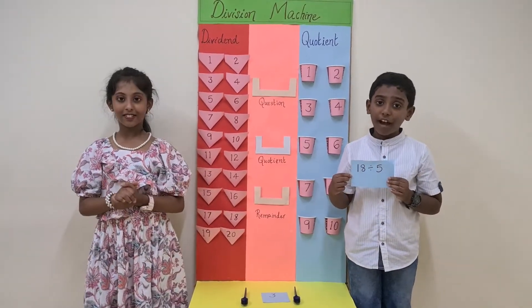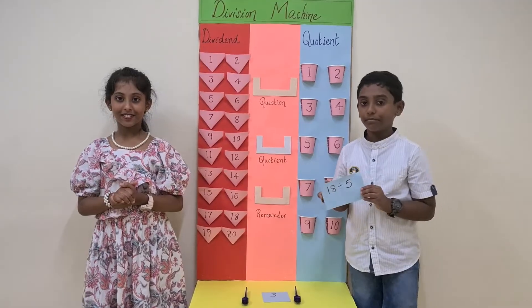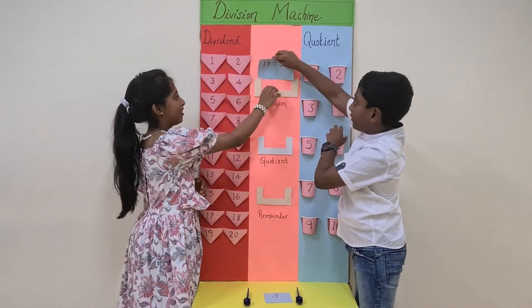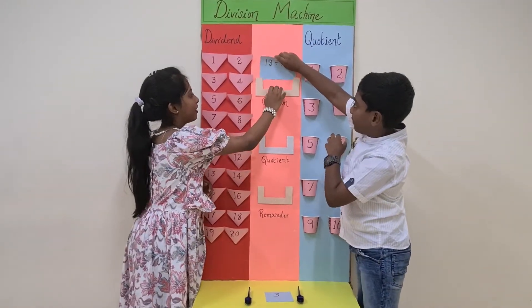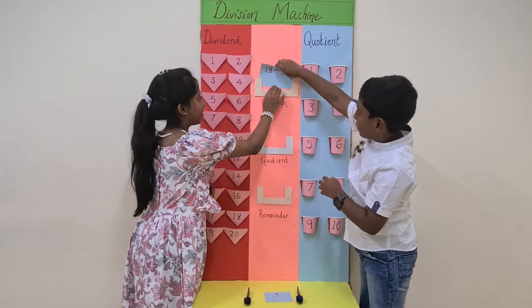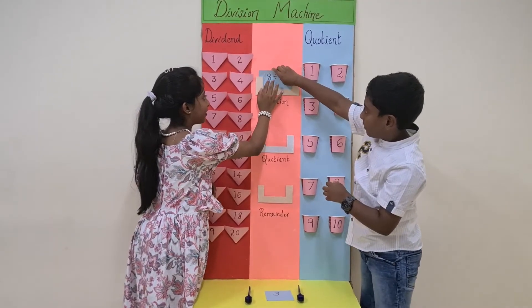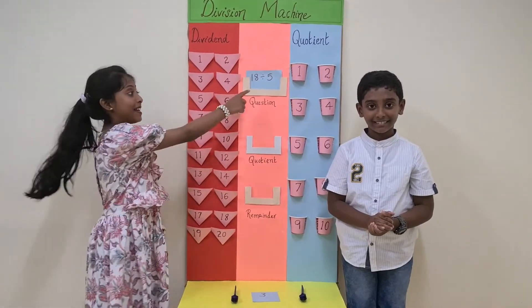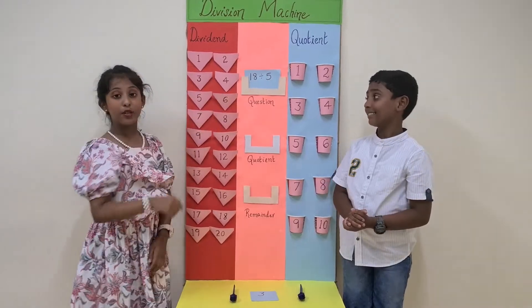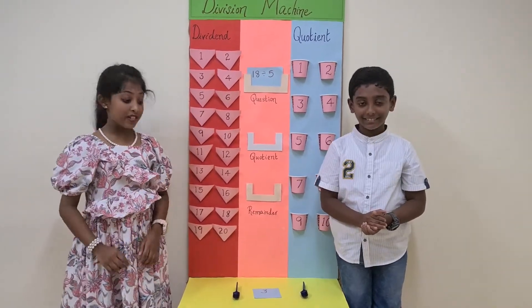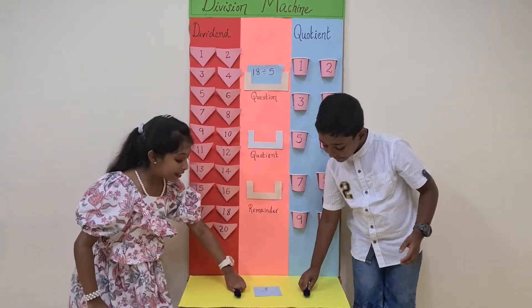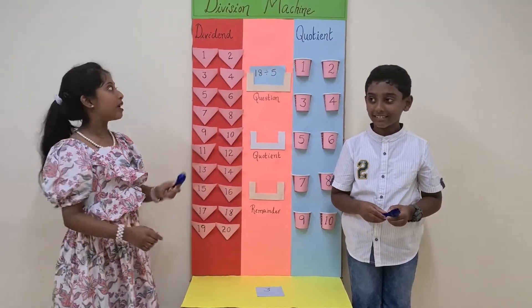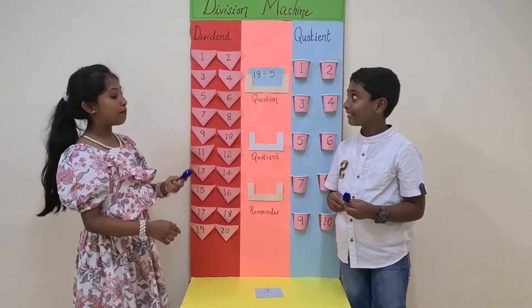18 divided by 5. Let's put it in the question box. Here 18 is the dividend, so we will take 18 spoons and then put each one of them in the dividend pouch.